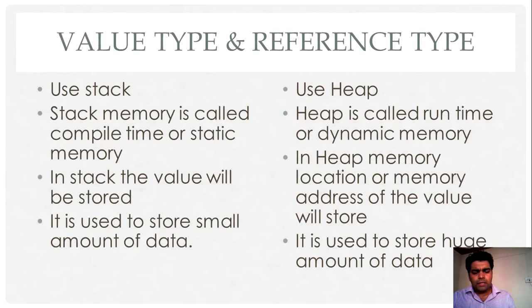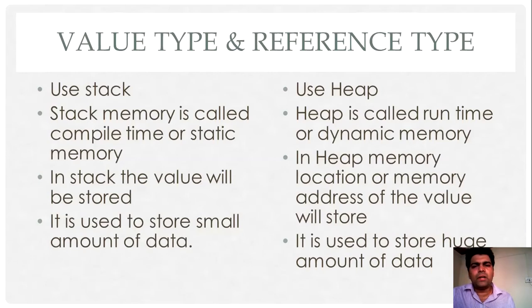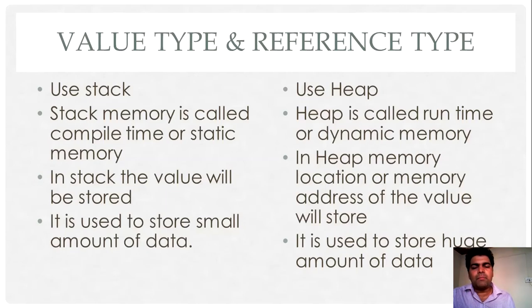Let's understand what is value type and what is reference type. Data types in VB.NET can be categorized into two different categories: value type and reference type. The basic difference is that value type data is stored in stack, while reference type data is stored in heap.